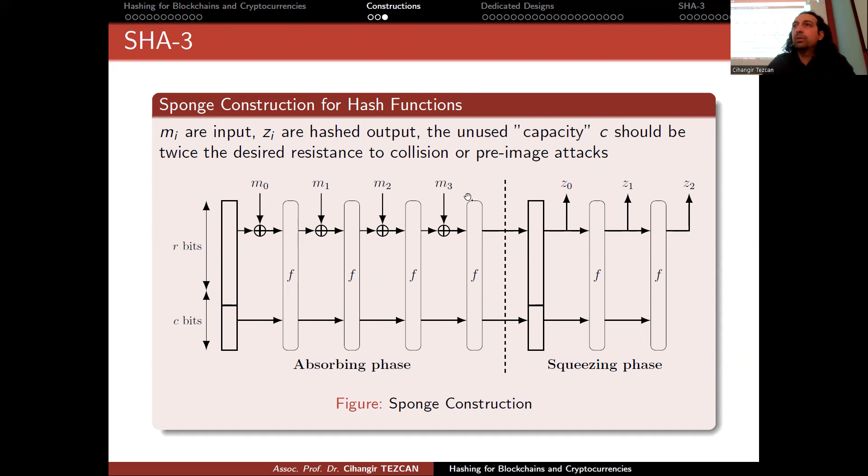Perform the function again and provide more r bits until these z_i's are enough for you to have an output as a hash function. If your hash function output is 256 bits, these will be 256 bits that you want as an output.